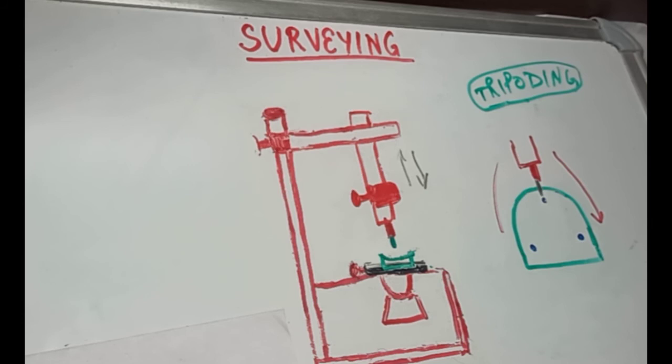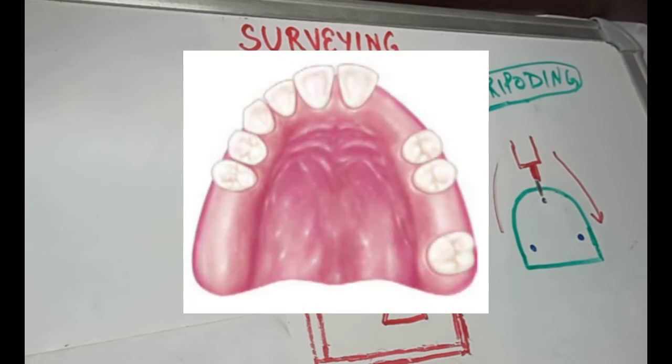After tripodding, additional reference points can also be marked on the cast using the same procedure. Commonly used additional reference points are distal marginal ridge of the first premolar, incisal edge of the lateral incisor and lingual cusp tip of the first premolar on the opposite side. Now, this is done because these reference points are located on the distinctive anatomical landmarks and are easy to locate on the master cast.